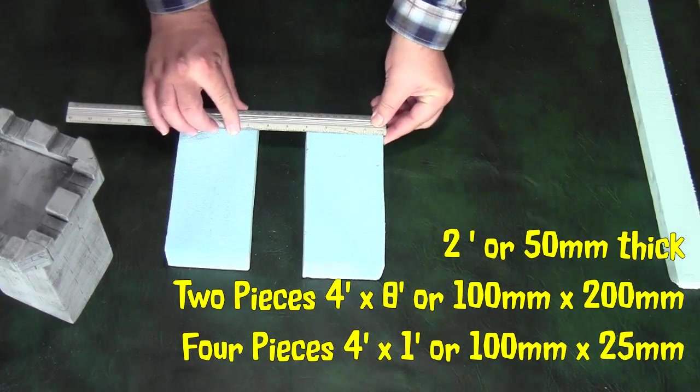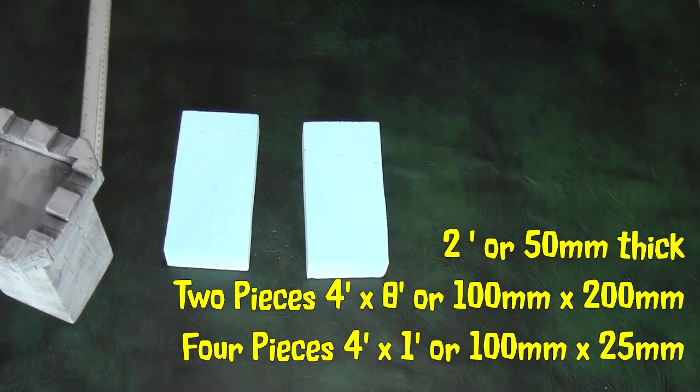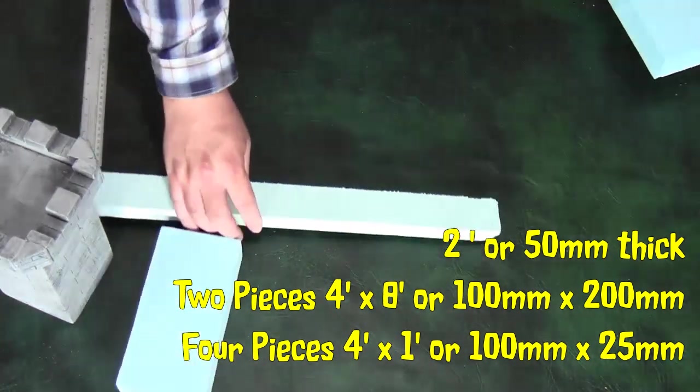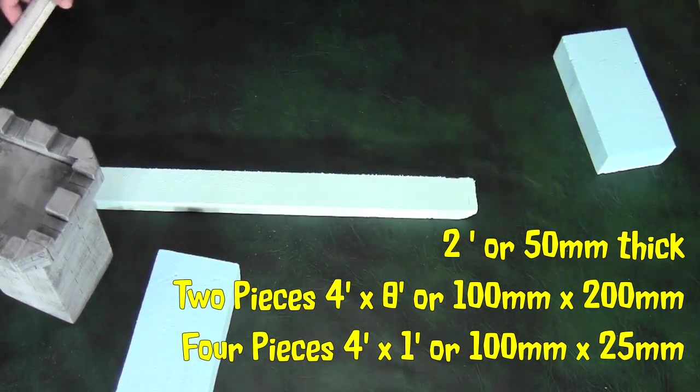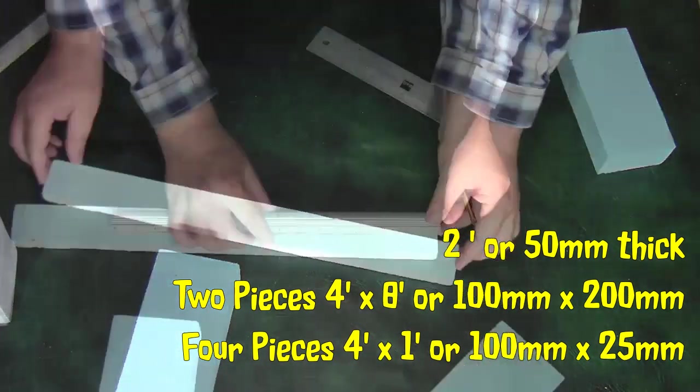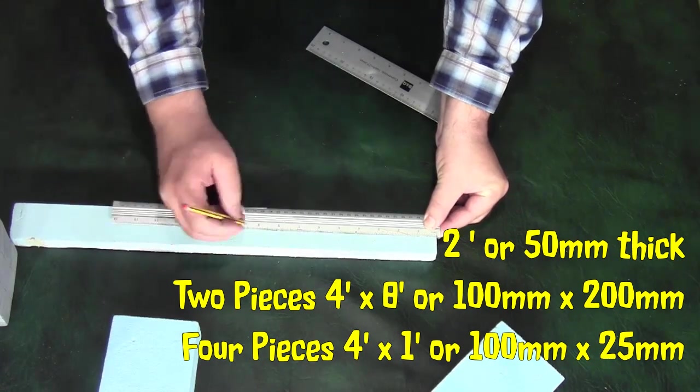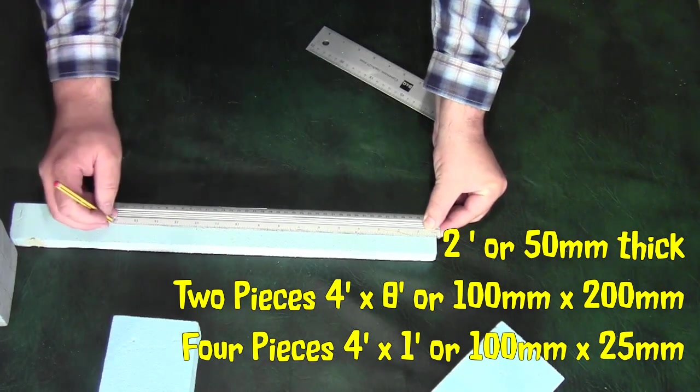You're going to need two pieces of blue foam, also known as styrofoam or modeling foam. All the foam is 2 inches or 50 millimeters thick. There are two pieces measuring 4 inches by 8 inches or 100 by 200 millimeters, and then there's a long strip that is 1 inch or 25 millimeters thick.